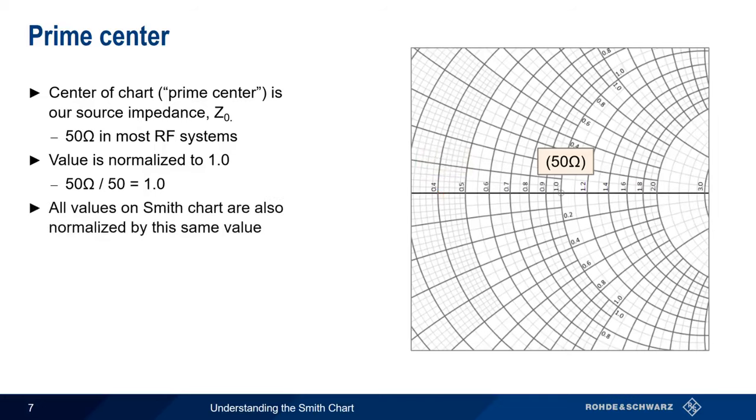Keep in mind that all values on the Smith Chart, both resistive and reactive, are normalized by the same value. This allows the same Smith Chart to be used regardless of system impedance, for example, in systems that have a standard system impedance of 75 ohms.